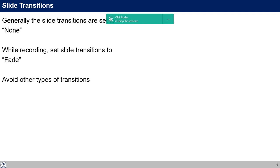For slide transitions we are generally using None, so slides simply appear and disappear. While recording, such as in Zoom sessions, Fade is acceptable — it fades from one slide to the next. Try to avoid other types of transitions. I've seen transitions like Cube, which looks jazzy but has a lag in online presentations. Cube-type transitions can look nice in face-to-face presentations, but try to avoid them online.